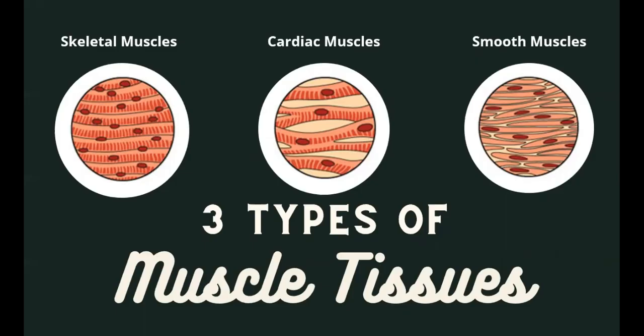There are three types of muscle tissues: skeletal muscles, cardiac muscles, and smooth muscles. Skeletal muscles are attached to the skeleton, make the bones move, and are mostly voluntary. Under a microscope, they appear to have stripes or striations. Cardiac muscles are found in the walls of the heart, are involuntary, and are also striated. Smooth muscles form parts of internal organs like the bladder, stomach, intestines, and blood vessels. They are non-striated and involuntary.